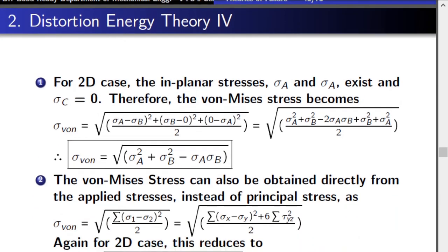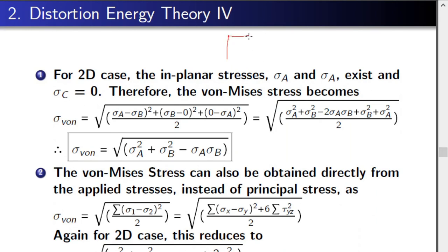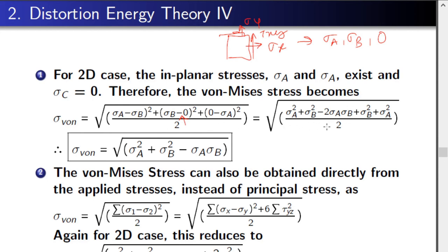Now let us study the special case of a 2D stress state, where only sigma_x, sigma_y, and tau_xy are applied. The principal stresses are two in-plane stresses sigma_A and sigma_B, and one out-of-plane principal stress equal to zero. Substituting into the distortion energy equation with the third component equal to zero, and simplifying, gives the von Mises stress for the 2D case: sigma_vm = sqrt(sigma_A² + sigma_B² − sigma_A × sigma_B). Note: the coefficient is not 2; it is simply minus sigma_A times sigma_B.